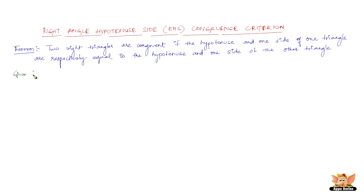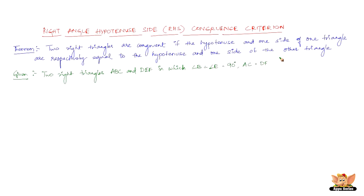Given we have two right triangles, triangle ABC and triangle DEF, in which angle B equals angle E, equal to 90 degrees, and AC equals DF, and BC equals EF. What we have to prove with this data is that triangle ABC is congruent to triangle DEF.